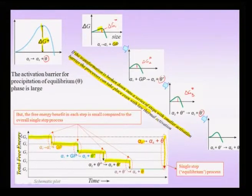If I plot the total Gibbs free energy, there is a small lowering when GP zones form, further lowering when theta double prime forms, even further for theta prime, and finally the lowest equilibrium state for theta. Forming theta directly from alpha would give a large overall benefit, but this implies that if the transformation is broken into a series of steps with small activation barriers, the process can take place even with low thermal activation.